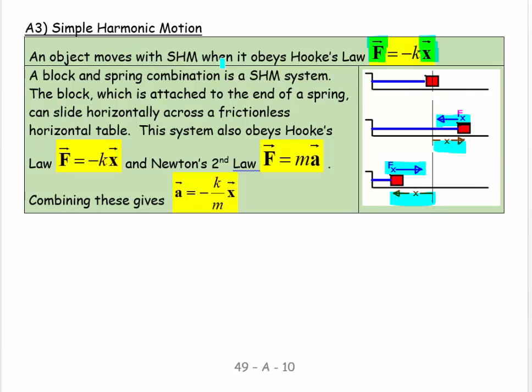So we say an object moves with simple harmonic motion when it obeys Hooke's law. A block and spring combination is a simple harmonic system. The block which is attached to the end of the spring can slide horizontally across a frictionless horizontal table. This system obeys Hooke's law and it obeys Newton's second law. And so when you get two equations like this and it has to obey both of them at the same time then the behavior is quite well defined. And what we get is, we can say F equals ma and F equals minus kx. And these F's are the same. So ma equals minus kx. So a is equal to minus k over m times x. And that's a vector and that's a vector. I don't learn that equation. I can get it any time I like just by combining these two equations.